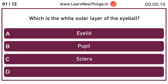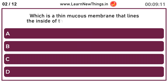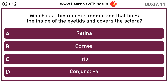Sclera, which is the white outer layer of the eyeball. Conjunctiva, which is a thin mucous membrane that lines the inside of the eyelids and covers the sclera.